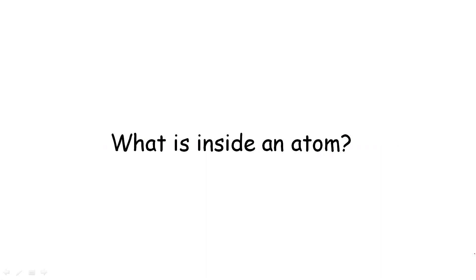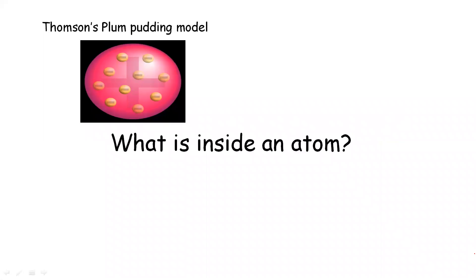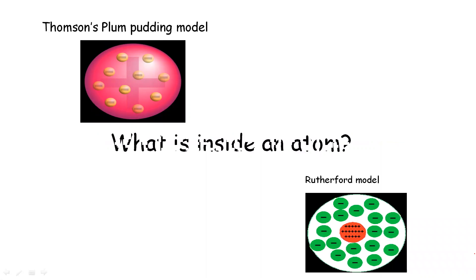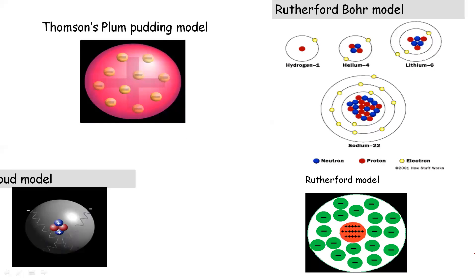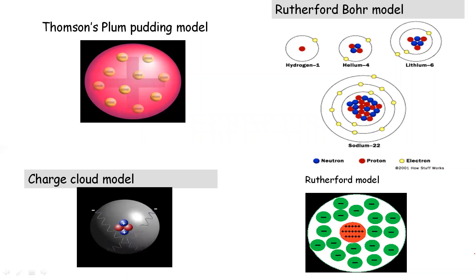There are different atomic models: Thomson's plum pudding model, Rutherford model, Bohr model of atoms, and the modern atomic structure — the charge cloud model. All scientists agree that there are three sub-atomic particles: protons, electrons, and neutrons.